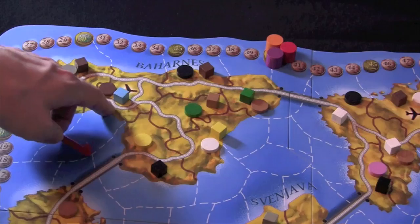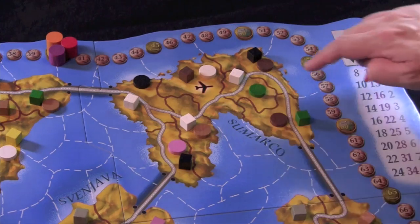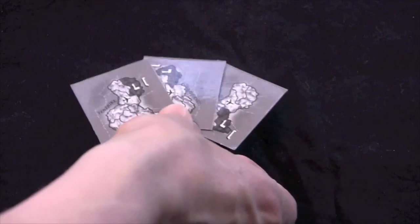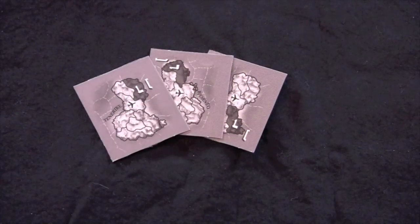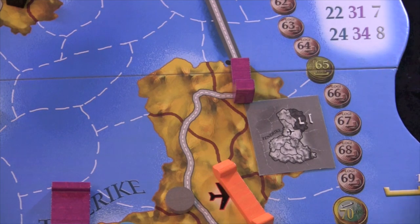The starting points for these vehicles are randomly determined at the start of the game, as is the distribution of the cubes and disks. Players also get three secret location cards, promising a bonus if they're able to deliver there.